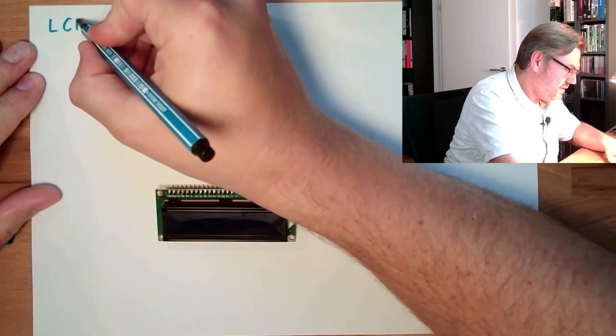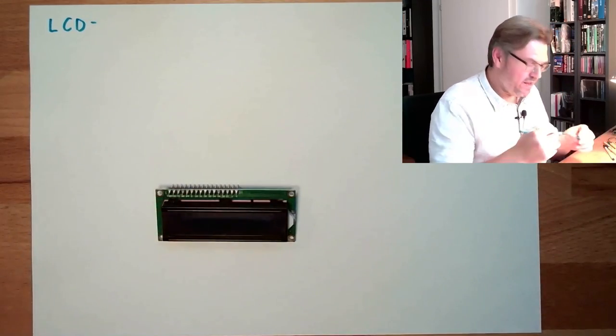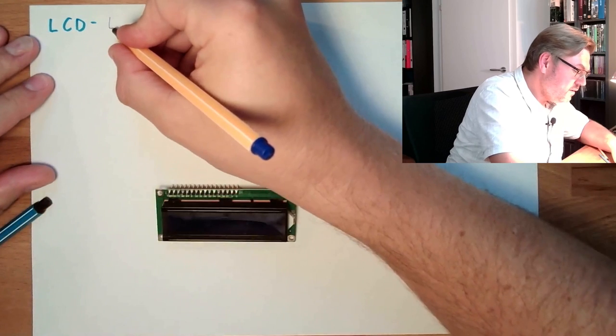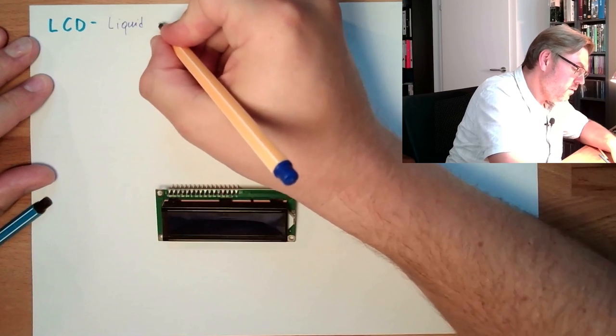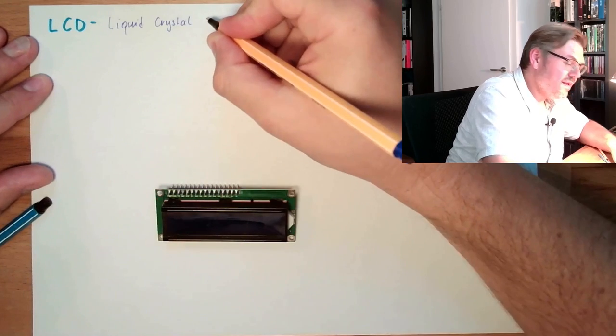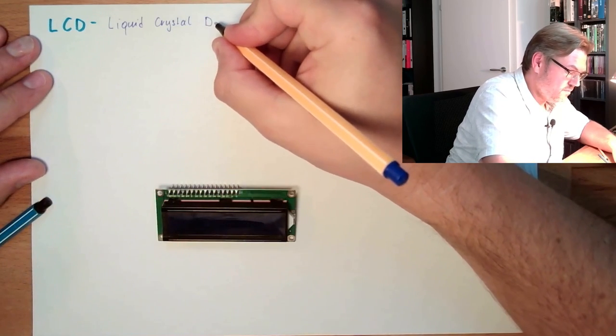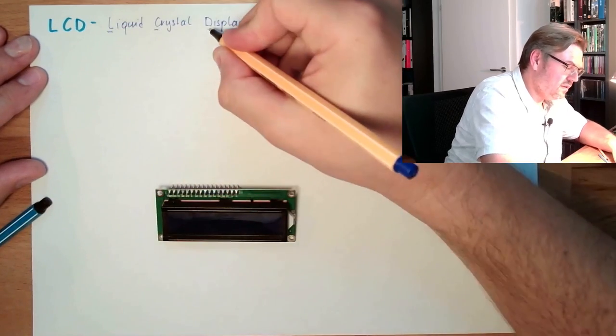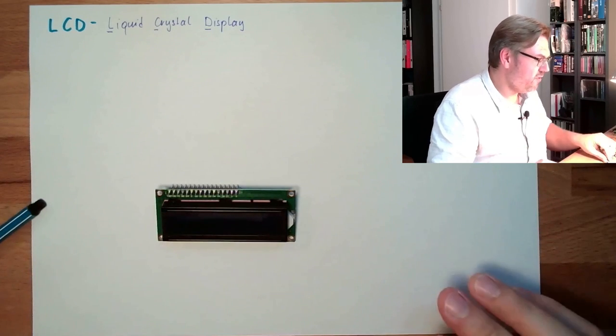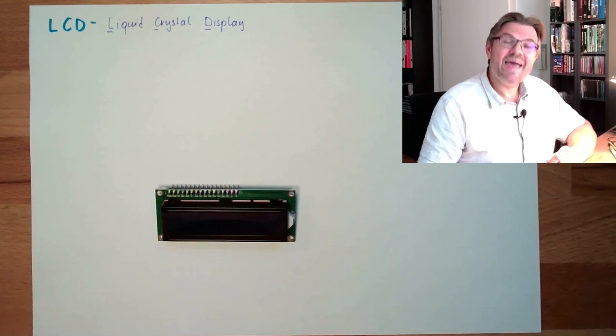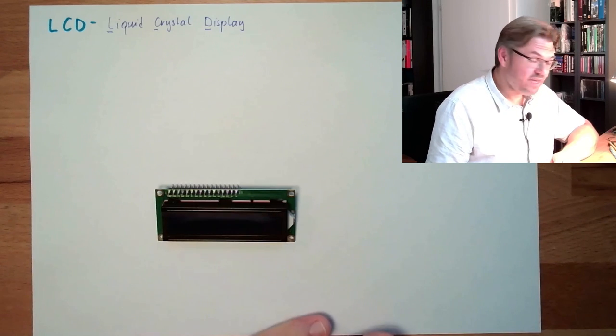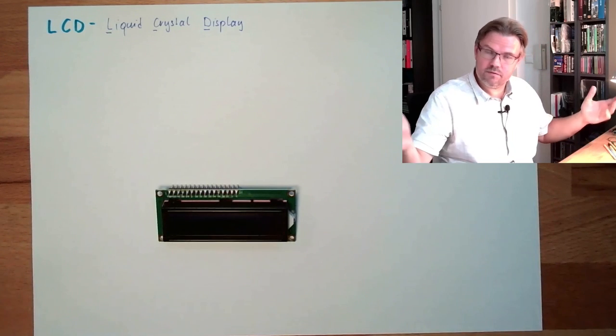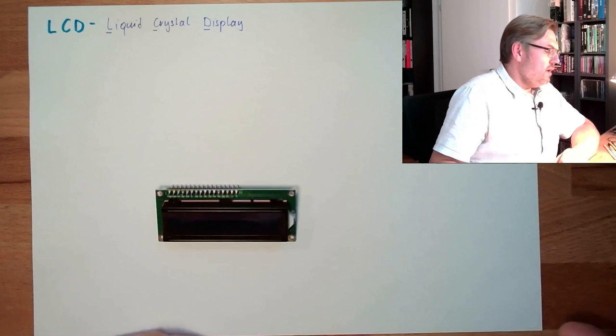What does it mean, LCD display? I already called it wrong, LCD display. Actually, what it means is liquid, crystal, and now the D is already the display. Liquid crystal display, LCD. So you can call it LCD or LCD display, as I've used before, which is actually wrong. A lot of people say it. It doesn't make it right.